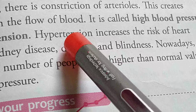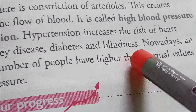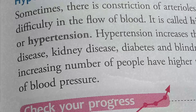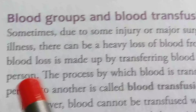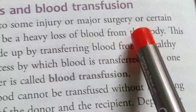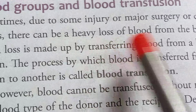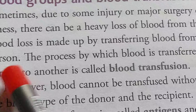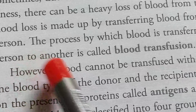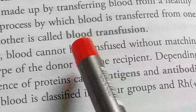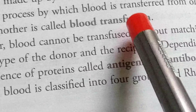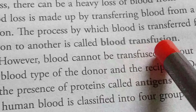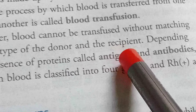Hypertension increases the risk of heart disease, kidney disease, diabetes, and blindness. Nowadays, an increasing number of people have higher than normal values of blood pressure. Sometimes, due to injury, major surgery, or certain illness, there can be heavy loss of blood from the body. This blood loss is made up by transferring blood from a healthy person — a process called blood transfusion.